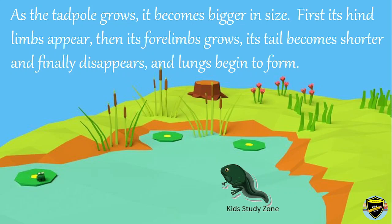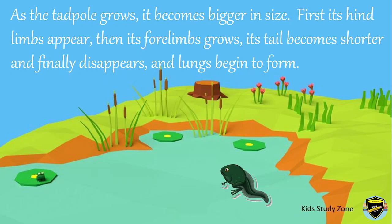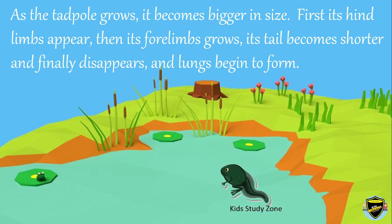As the tadpole grows, it becomes bigger in size. First, its hind limbs appear, then its fore limbs grow. Its tail becomes shorter and finally disappears, and lungs begin to form.